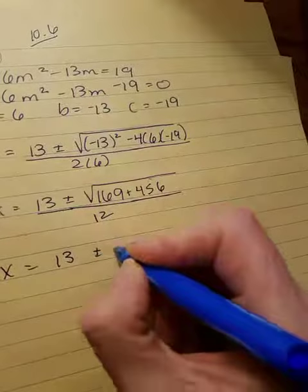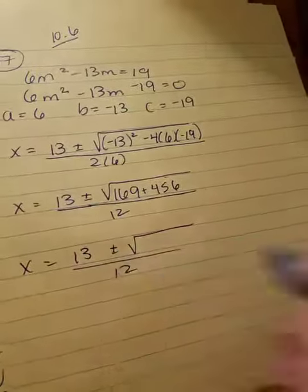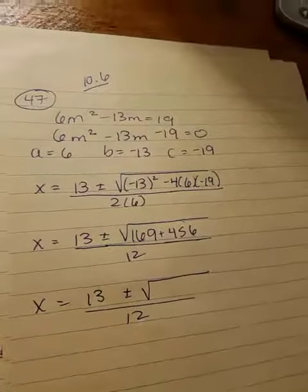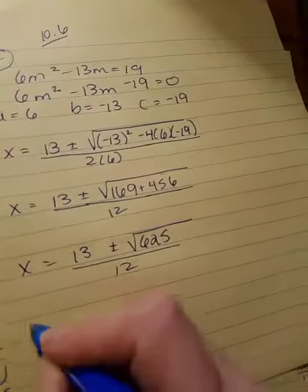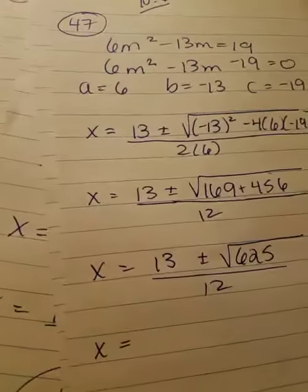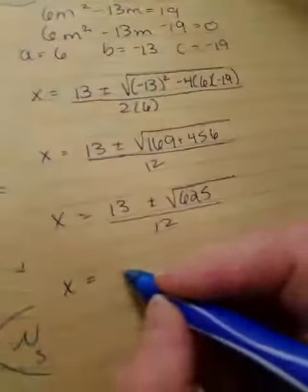So, let's add what's inside. 169 plus 456 gives me 625. Again, it's the whole numerator. That's over 2a, and the square root of 625 is actually 25.